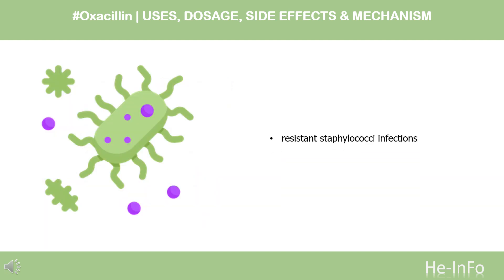What is oxacillin used for? Oxacillin is used in the treatment of resistant staphylococci infections.